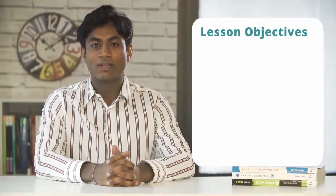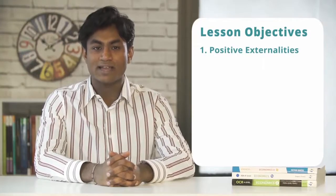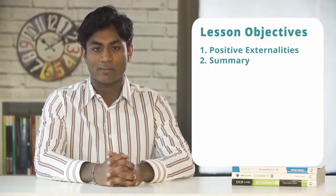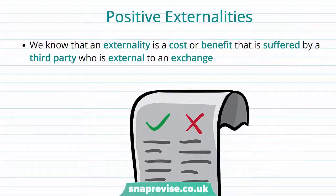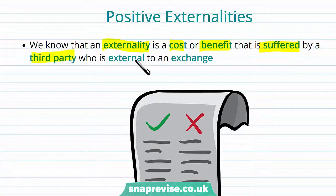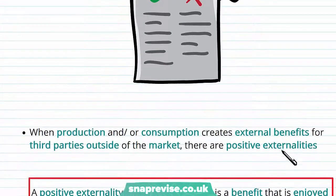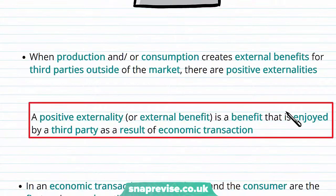In this video we'll be looking at positive externalities and then finishing off with a summary. We've mentioned externalities before with regards to negative externalities. An externality is a cost or benefit that is suffered by a third party who is external to an exchange — something external to an economic exchange or transaction that we see within a market.